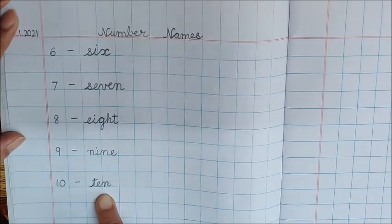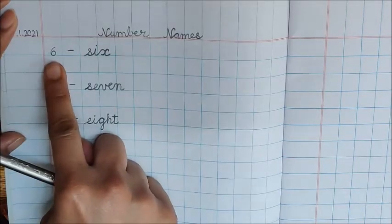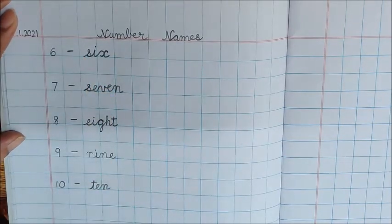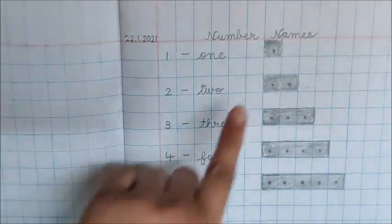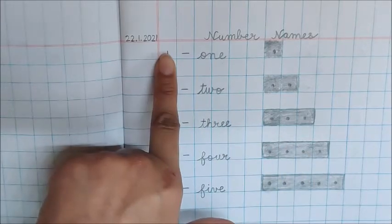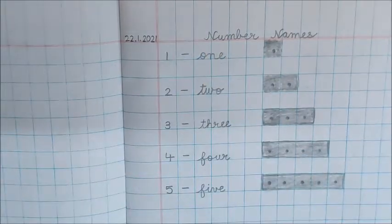Now what do we have to do? According to the number, you have to make dots and then shade the boxes. Just like we did for numbers 1 to 5. Make dots according to the number and do shading in the boxes.